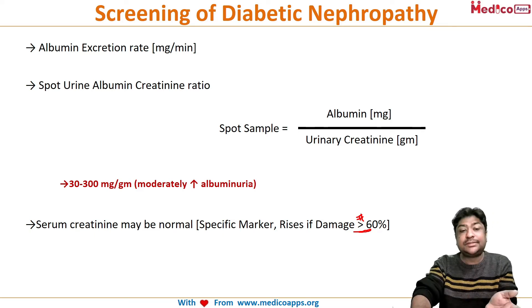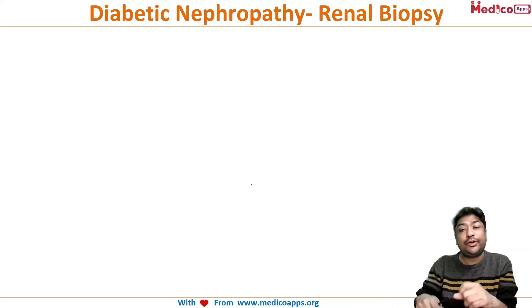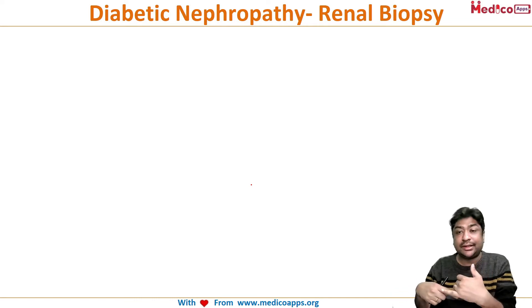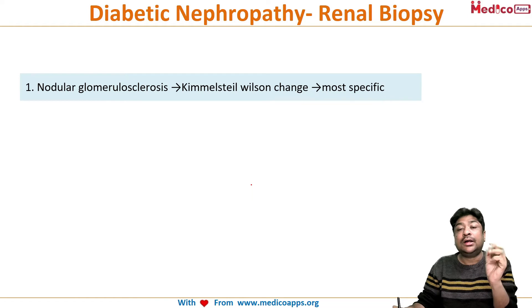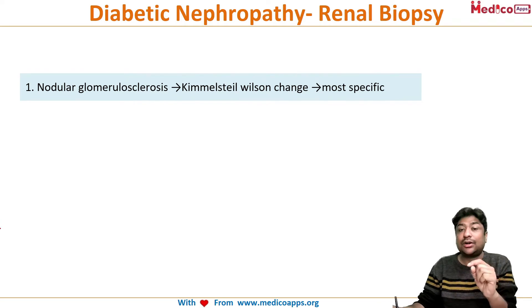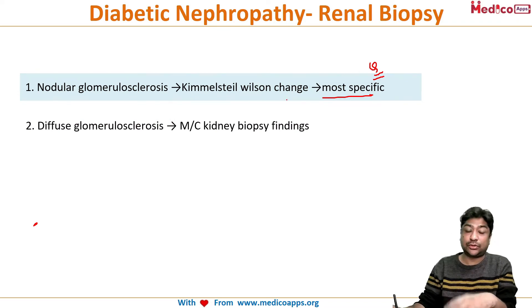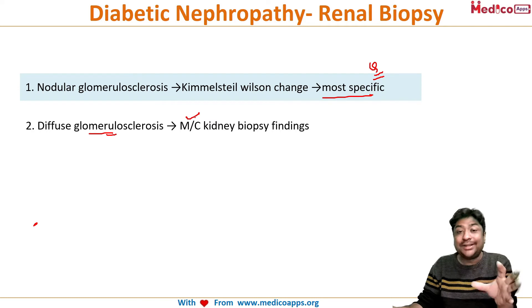Renal biopsy is generally not required to diagnose diabetic nephropathy, but for academic purposes we should know the pathological changes. The most specific change on renal biopsy is nodular glomerulosclerosis, called Kimmelstein-Wilson disease. The most common change however is diffuse glomerulosclerosis. So nodular glomerulosclerosis is most specific, while diffuse glomerulosclerosis is most common.